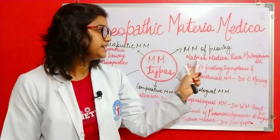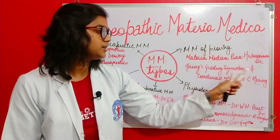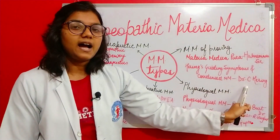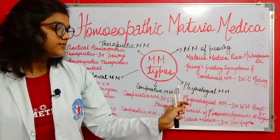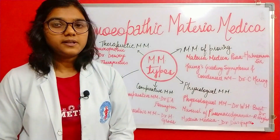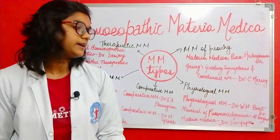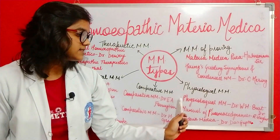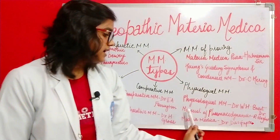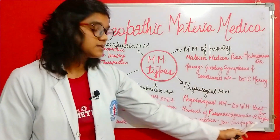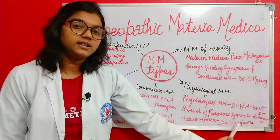The books under this type are: Materia Medica Pura by Hahnemann, and Hering's Guiding Symptoms and Condensed Materia Medica, written by Dr. Constantine Hering. The next type is physiological materia medica, described by Dr. Dasgupta. Books in this category include Physiological Materia Medica by Dr. W.H. Burt, Manual of Pharmacodynamics by Dr. Richard Hughes, and Materia Medica by Dr. Dasgupta.